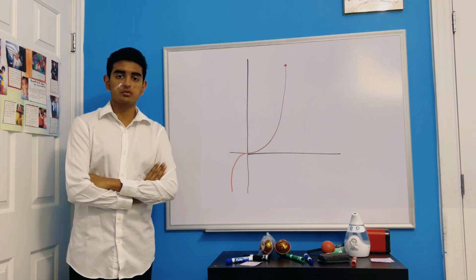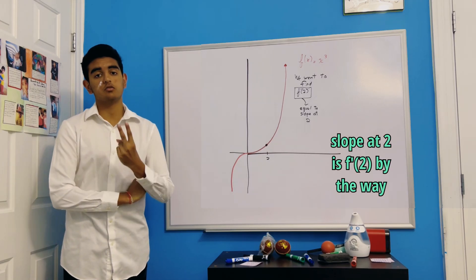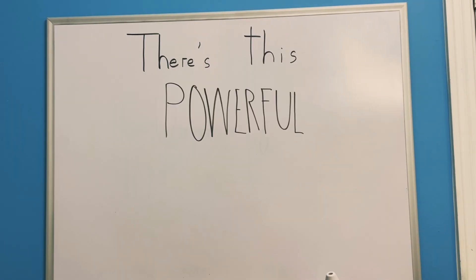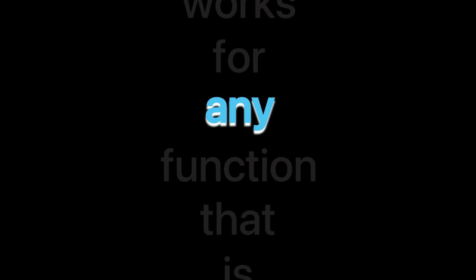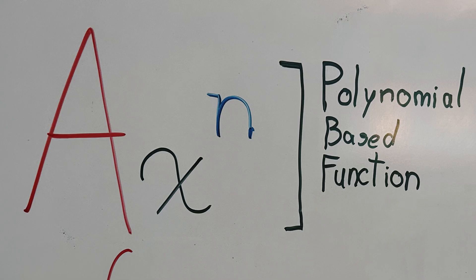So let's say you have the graph of f of x equals x cubed, and you want to find the slope at 2. So first, we need to find the derivative. Fortunately, there's this powerful rule called power rule, which works for any function that is written in the form ax to the n, where a and n are both numbers.